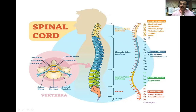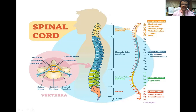Each spinal nerve has two roots of origin, and the spinal nerve immediately divides into ventral and dorsal ramus. This we have studied in general neurology. You can see the distribution of cervical nerves and which part of the body they supply. The spinal nerves come out from the spinal cord through the intervertebral foramina.